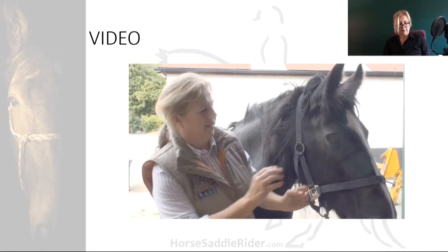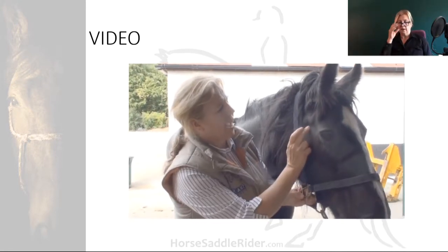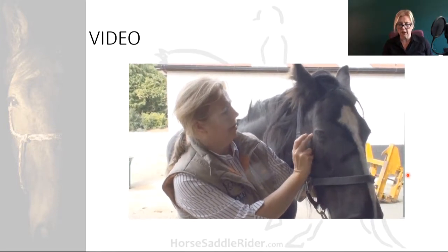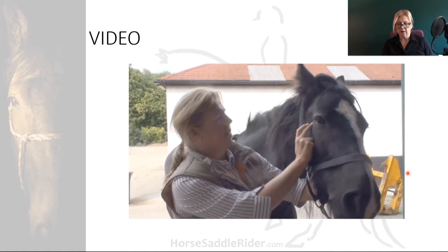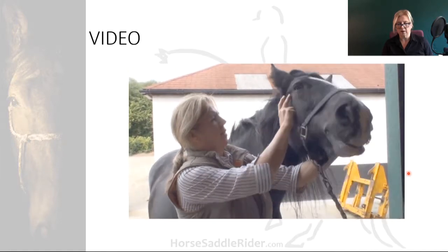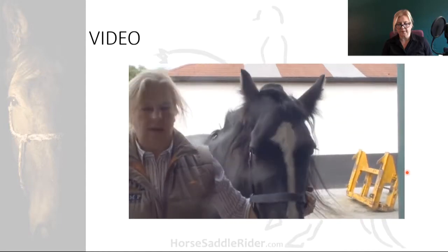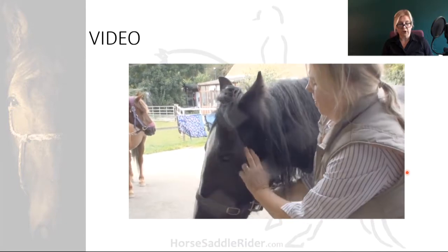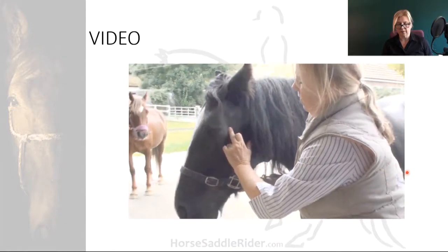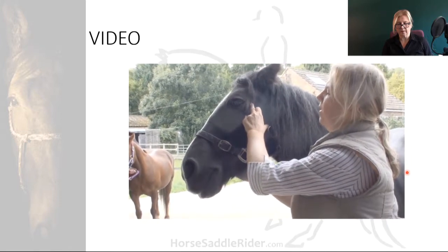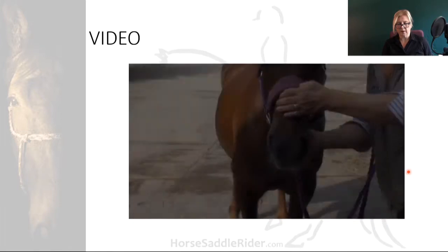Let's take a brief look at these tests in action. First is the palpation of the musculotendinous junction — you can see some reaction from that horse. And if I do the other side, there's more reaction; a little bit of a reaction but not as much as the other side.